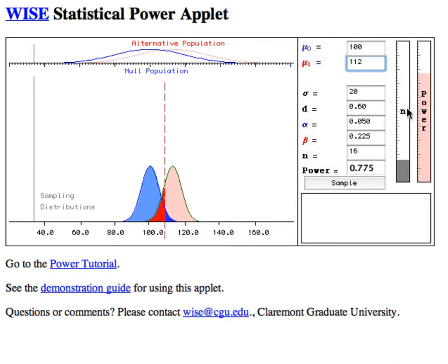One is N, or the size of your sample, and the other one is power. Let's see what happens when we tweak different parameters and see what happens to these two.